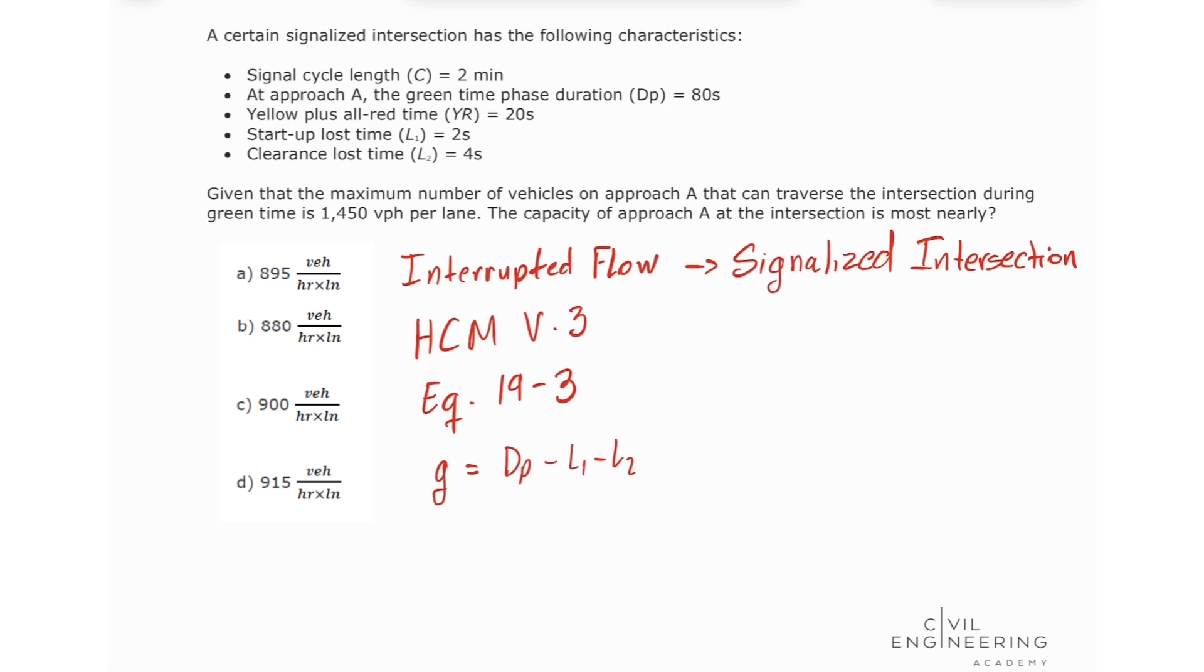So let's input these values. We have that our effective green time is going to equal our phase duration, which is 80 seconds, minus our startup loss time, which is 2 seconds, minus our clearance loss time, which is 4 seconds. So we have that our effective green time will be 74 seconds.